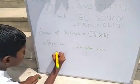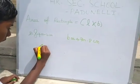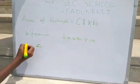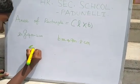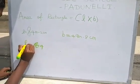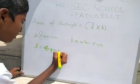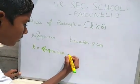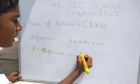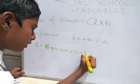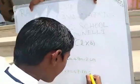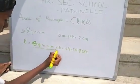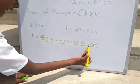So, the length is 84 meters 2 centimeters, multiplied by the breadth, 49 meters 8 centimeters. Let us now calculate this.